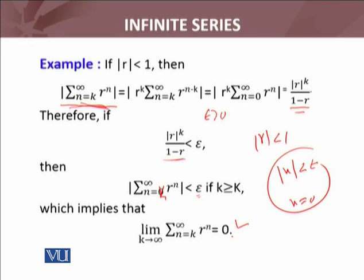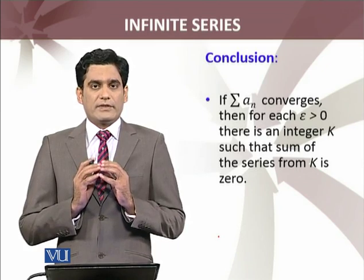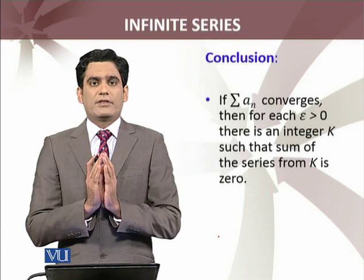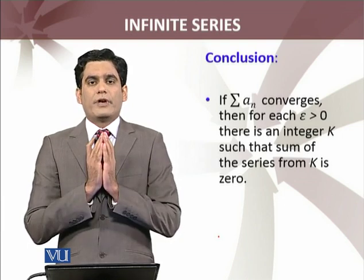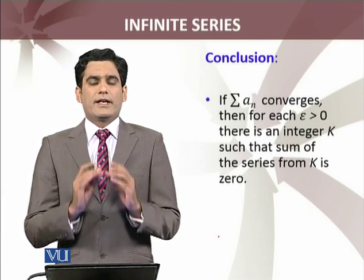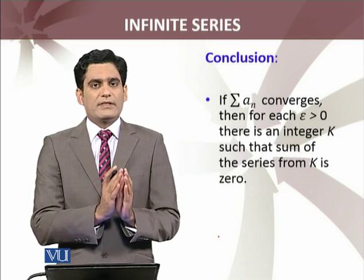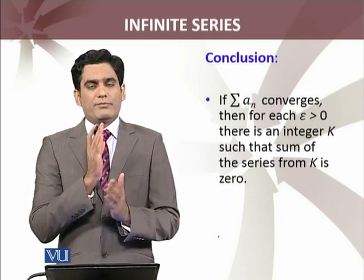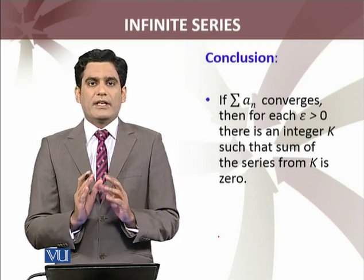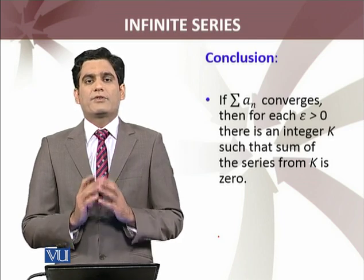This is what we wanted to discuss. So what we have done, we have seen for a particular example, that we have taken a convergent series. For a convergent series, for every epsilon greater than zero, we must be able to find out some integer k, such that the sum of the series starting from that k onwards must equal zero. We applied this to an example, which example was the geometric series.